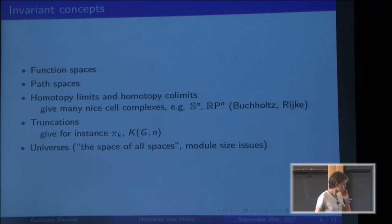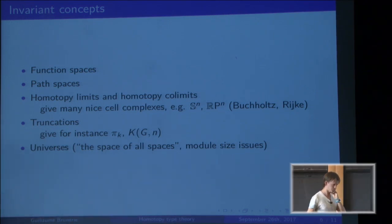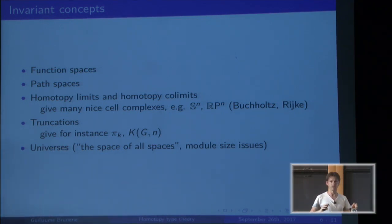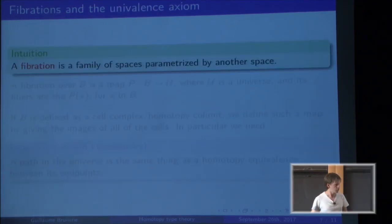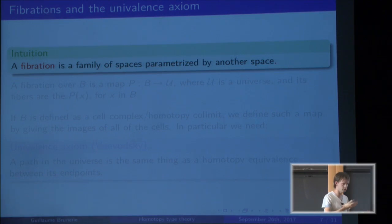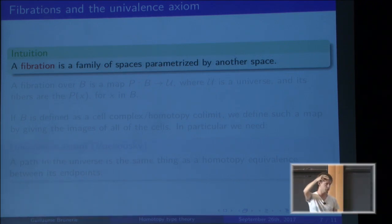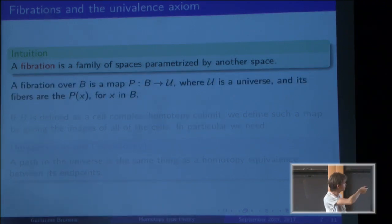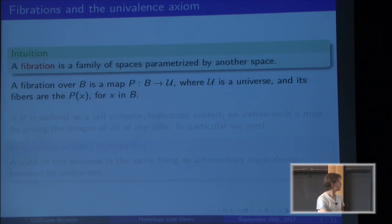Let's talk more about fibrations. Earlier I said fibrations are problematic because they're not stable under homotopy. But that's because viewing a fibration as a map from the total space to the base space is not really the right way. A fibration should be seen as a family of spaces parameterized by another space. In ordinary topology it's not easy to encode that directly, so we use the map from total space to base, but that's really just the intuition.